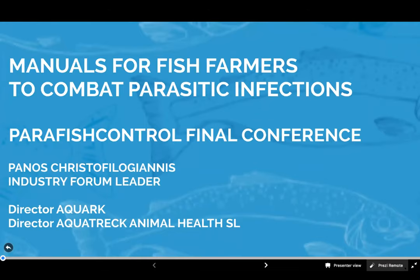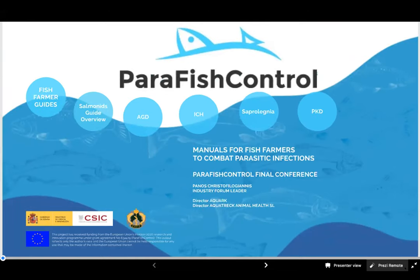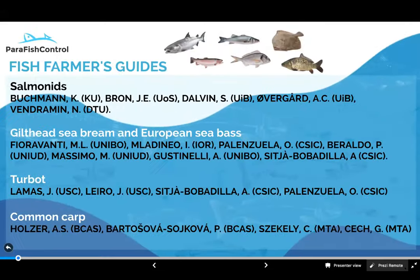My role in Para Fish Control is leading the Industry Forum, and this is one of the products for dissemination of the information that scientists produced from the project to the public and to the industry. We are aiming to have four different guides: one for salmonids, one for sea bream and sea bass, one for turbot, and one for common carp.